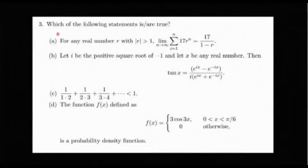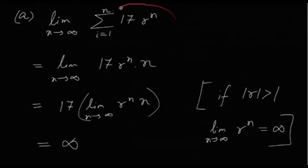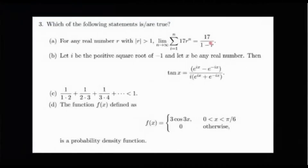Problem three asks which statements are true. Option A states: for any real number r with |r| > 1, the limit as n→∞ of Σ(i=1 to n) 17·r^n equals 17/(1−r). Since no term depends on i, the sum is just 17·r^n · n. Since |r| > 1, r^n → ∞ and n → ∞, so the entire expression diverges to infinity. Option A is false.